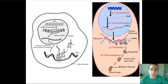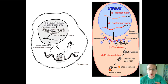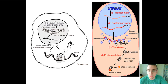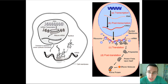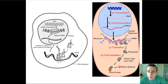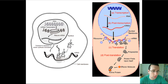It all starts with transcription, which is the process by which DNA code gets transcribed into RNA code using base pairing rules and an enzyme called RNA polymerase. Then, if you're in a eukaryotic cell — and in eukaryotic cells only, prokaryotic cells do not do this — the RNA needs to be processed in what's called post-transcriptional RNA processing. Then the RNA will exit the nucleus through the nuclear pores.